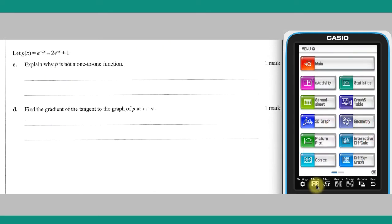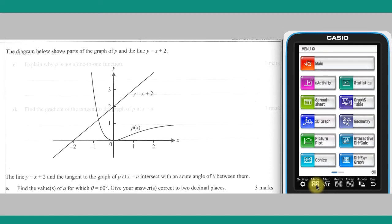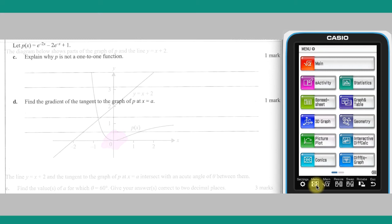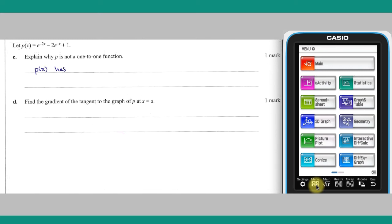Part C, this question concerns itself with a new function, P of X, which is not a one-to-one function, as it has a minimum value of 0 comma 0, as shown in the graph on the following page. This means that for some value X1 less than 0 and some X2 greater than 0, F of X1 will be equal to F of X2.